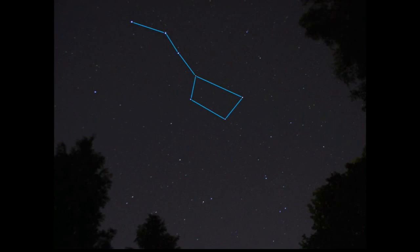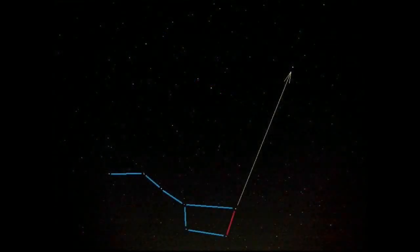And the Big Dipper has a total of seven stars that make up this constellation. And if you take the bottom two stars in this constellation, you draw a straight line. It points to a star called Polaris.